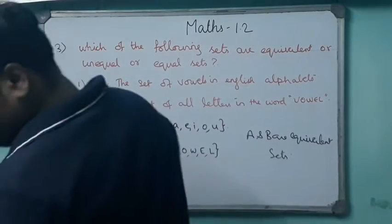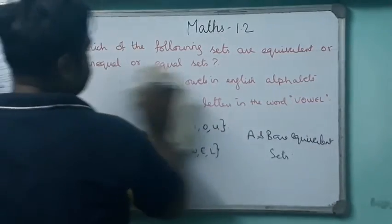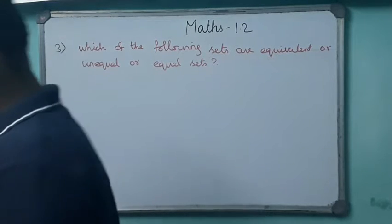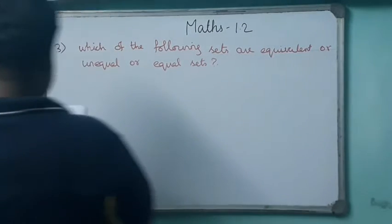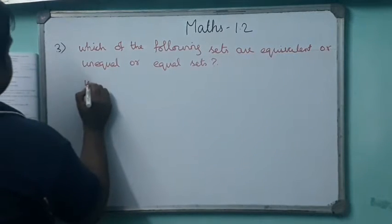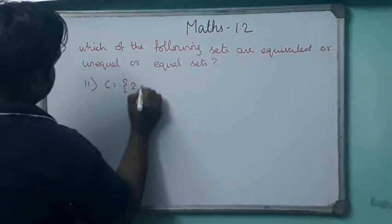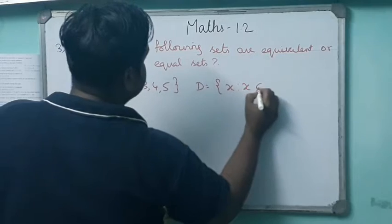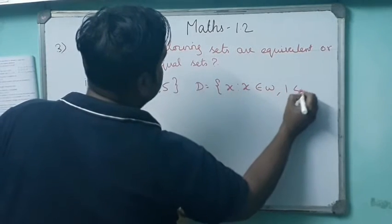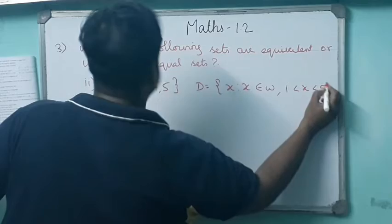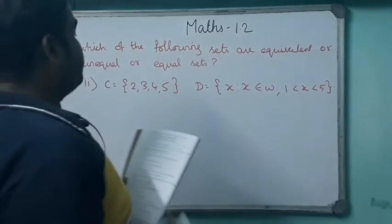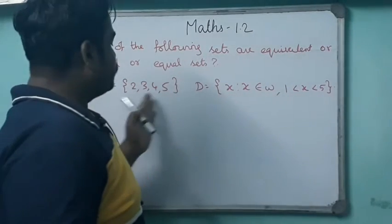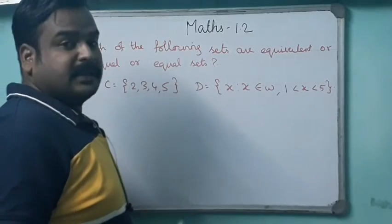The second sum: set C equals {2, 3, 4, 5} and set D equals {x such that x belongs to whole number, 1 less than x less than 5}. One set is given directly in roster form and another set is given in set-builder form. The roster form has elements 2, 3, 4, 5.